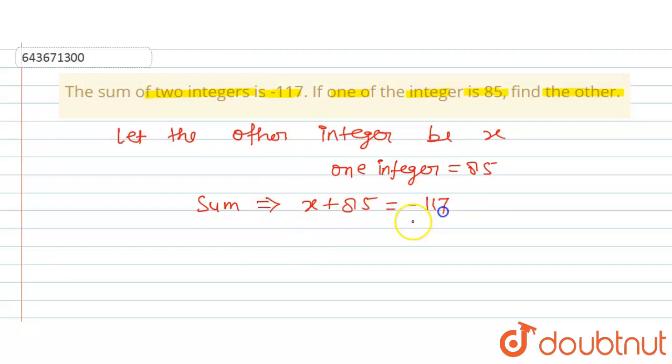Now we will find the value of x. So x will be equal to -117, and 85 goes to the right-hand side, so this is -85.